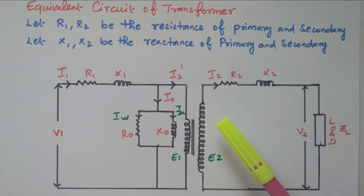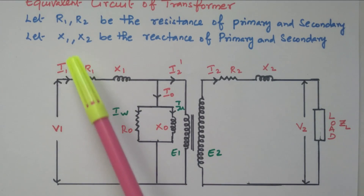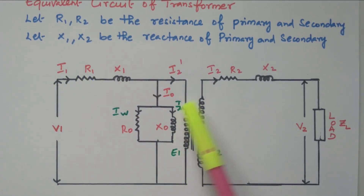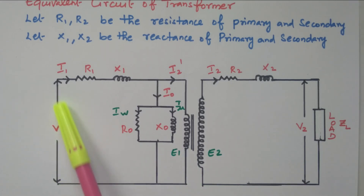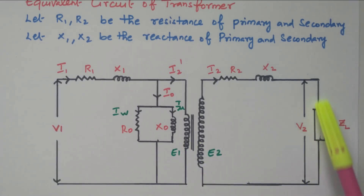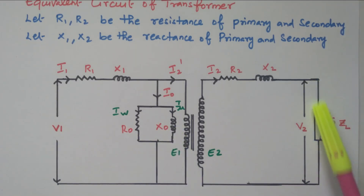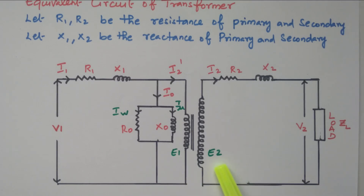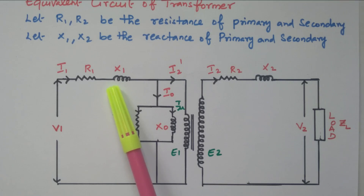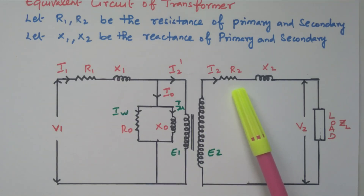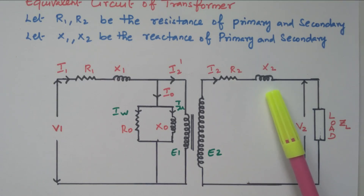We know that the transformer has a primary winding and secondary winding. The primary winding is applied with the voltage, and the secondary winding is connected with the load. V1 is the voltage applied to the primary winding. V2 is the voltage available at the secondary terminal as load voltage. E1 is the EMF induced in the primary winding, E2 is the EMF induced in the secondary winding. R1 is the resistance of the primary winding, X1 is the reactance of the primary winding. R2 is the resistance of the secondary winding, X2 is the reactance of the secondary winding.